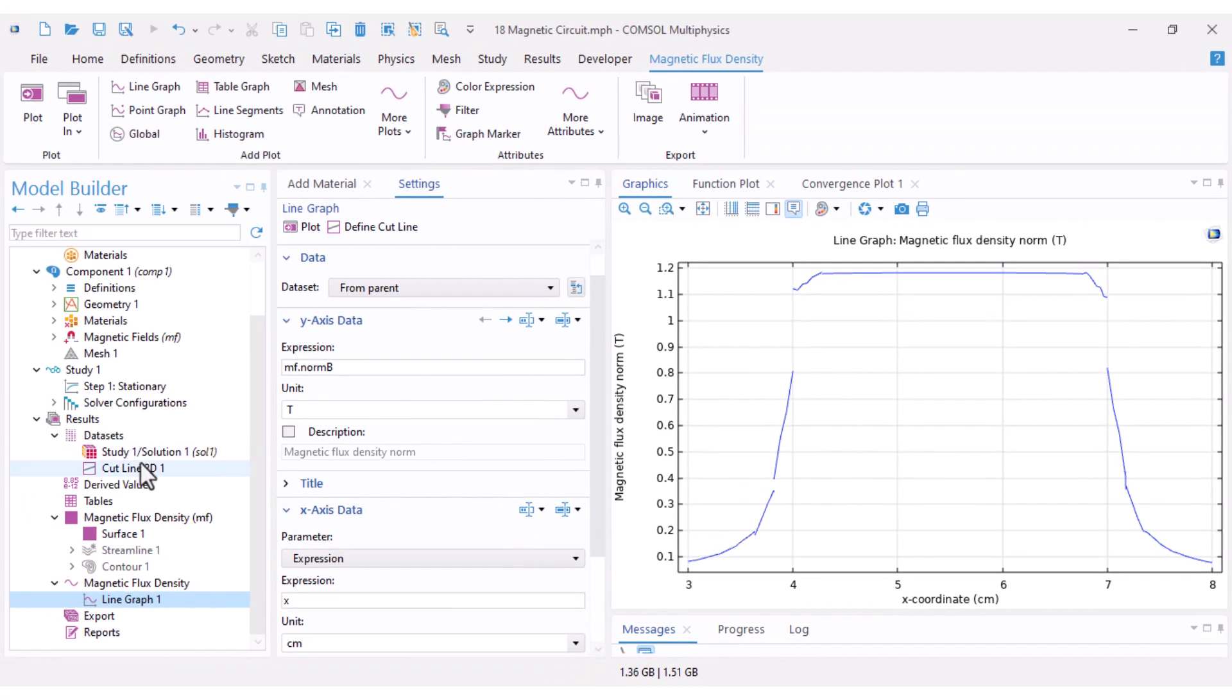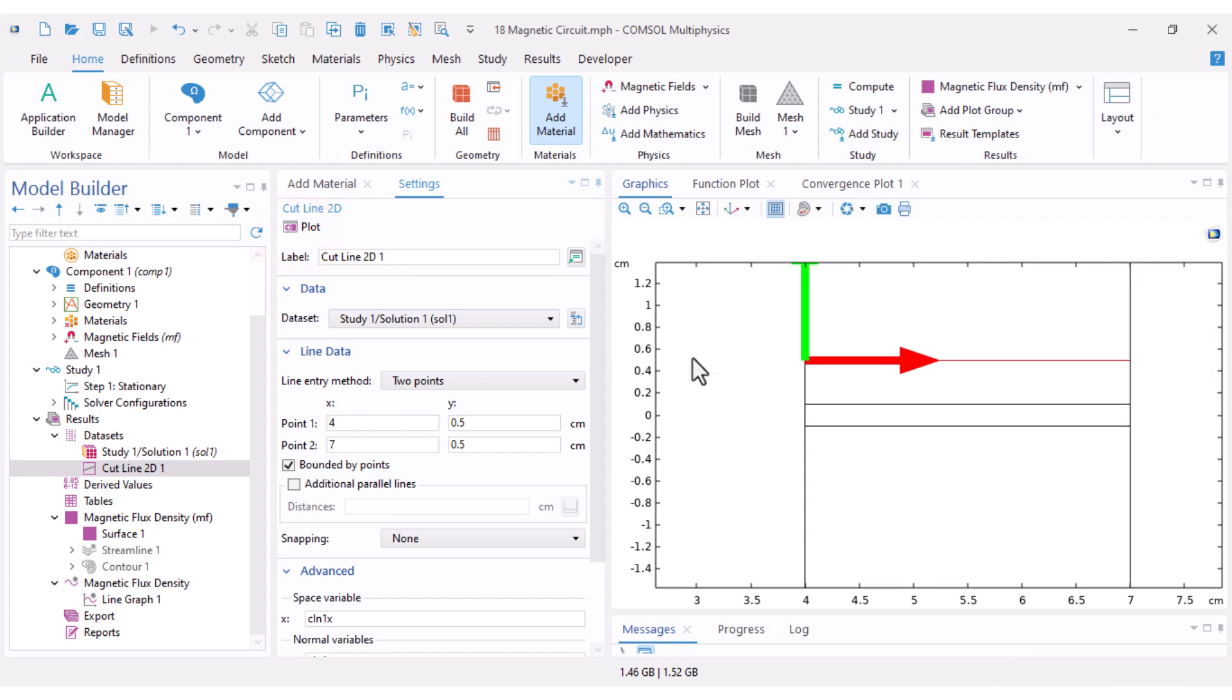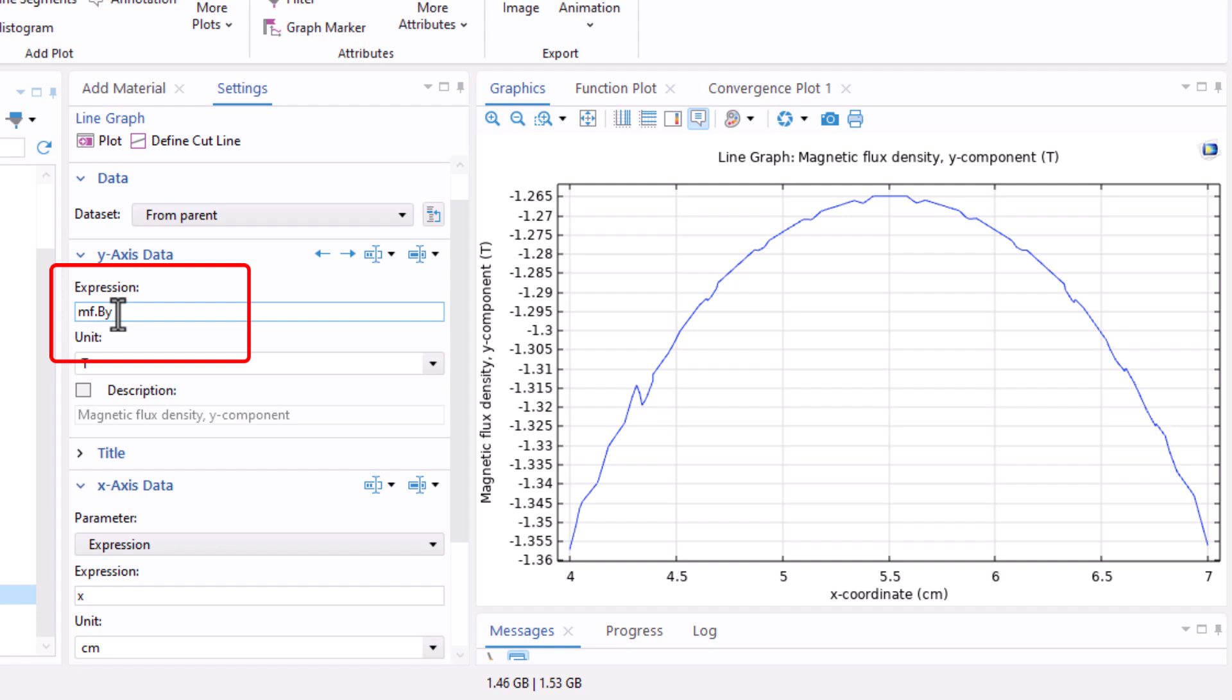In other words, the flux is not confined strictly within the air gap boundaries. Some of it leaks outward. Now I get back to cut line and modify it to 7 and 0.5 because I only want the portion inside the core. I get back to my 1D plot and change the expression to mf.By which is the y component of magnetic flux density.